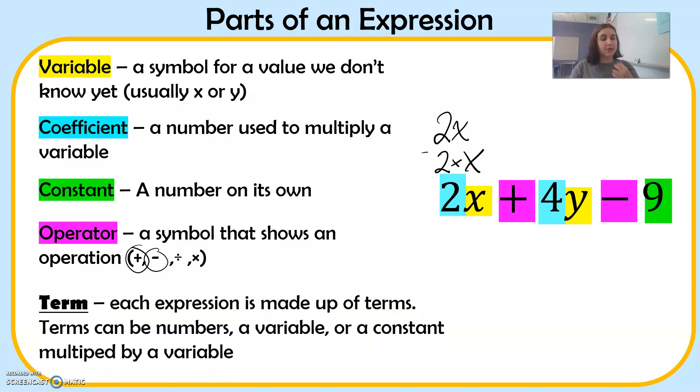Finally, there are terms. Each expression is made up of terms. Terms can be numbers, a variable, or a constant multiplied by a variable. In this expression, 2x is a term. So 2x is a term. 4y is a term. And 9 is a term.